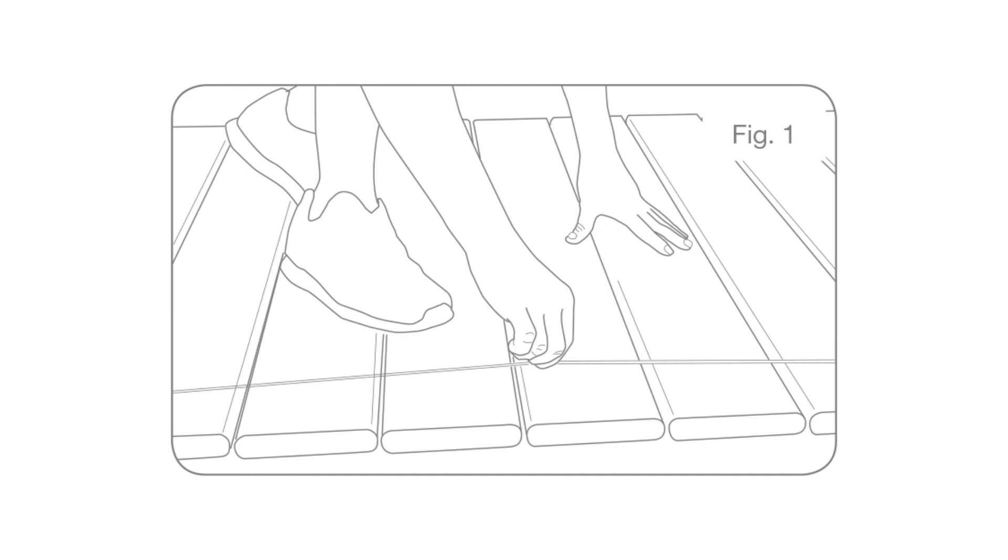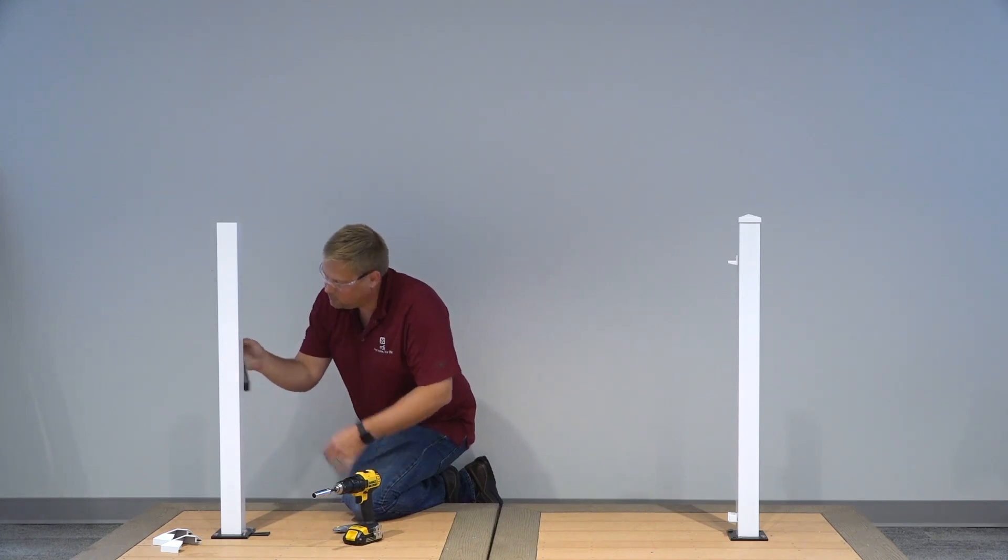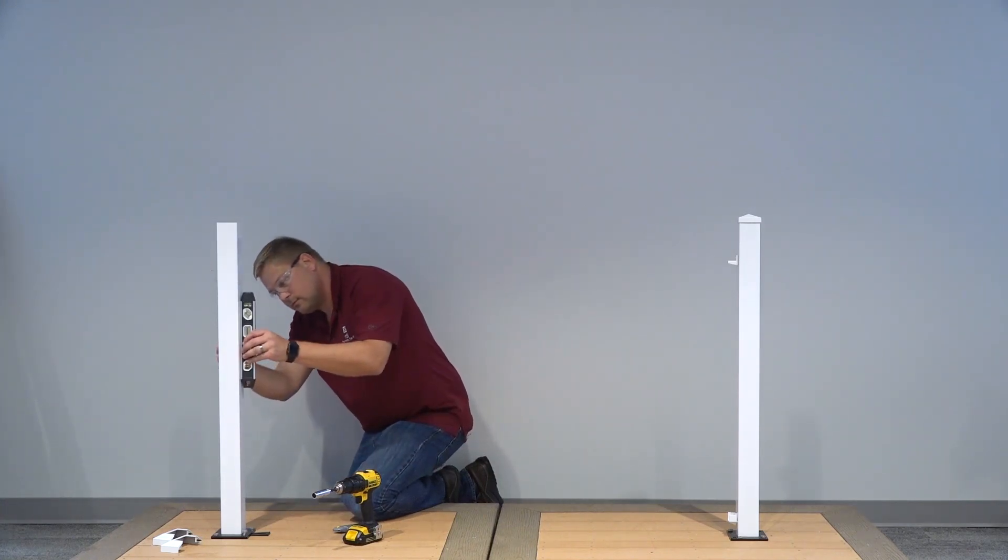Snap a line onto the deck to ensure proper post alignment. Be sure sufficient mounting structure exists to receive posts and install blocking if necessary.